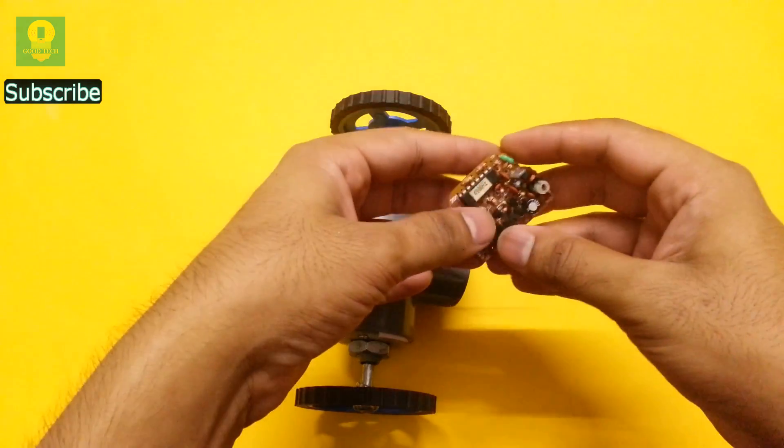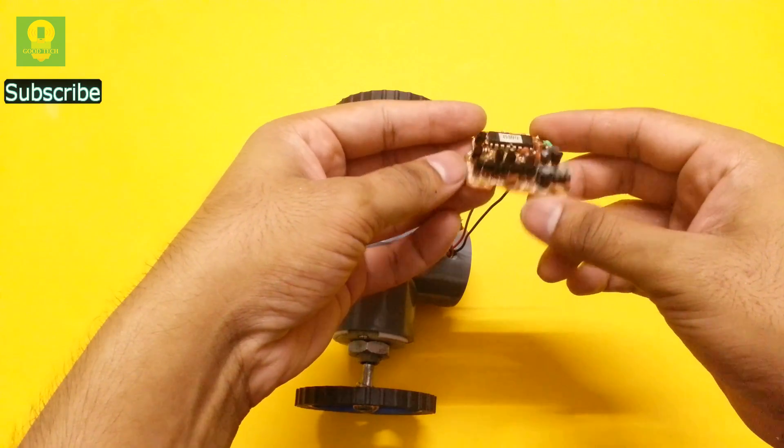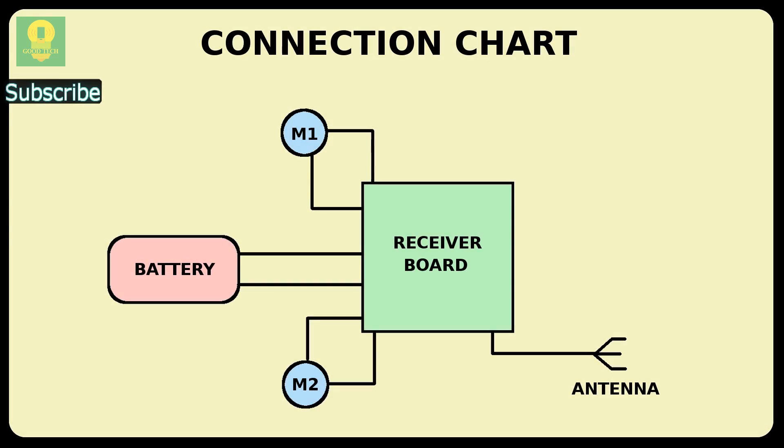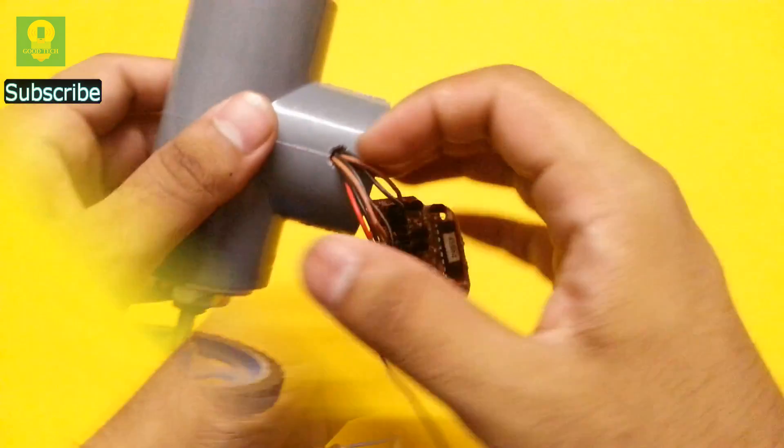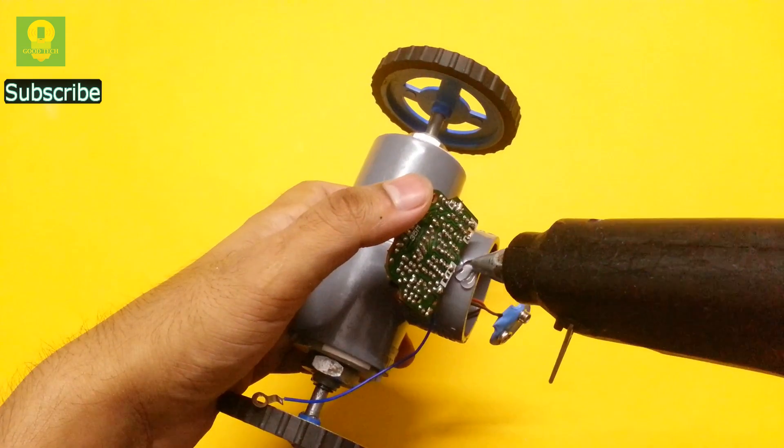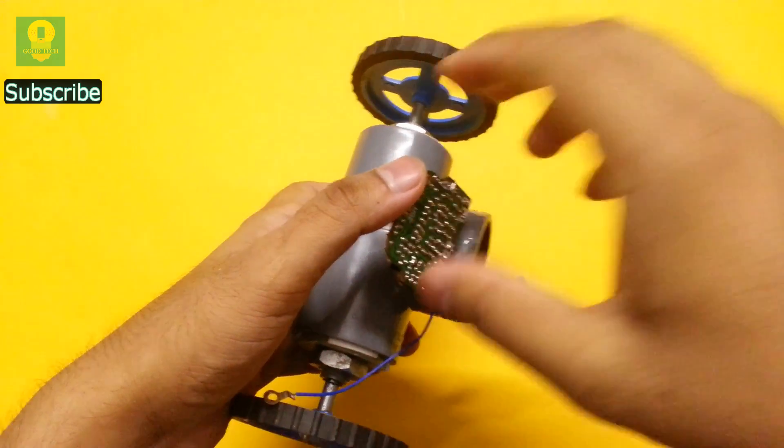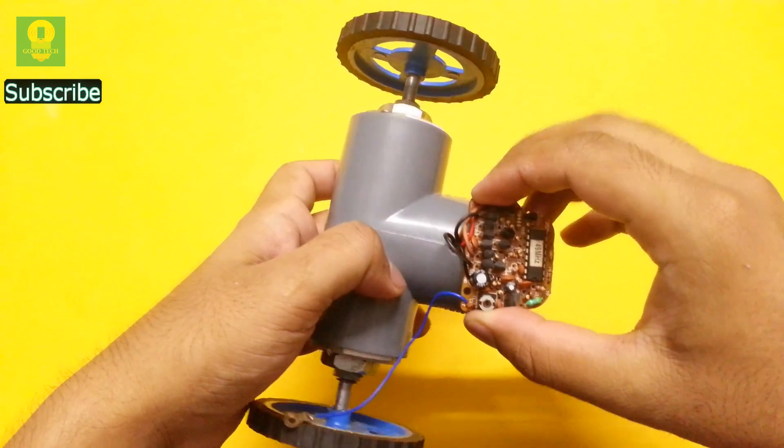Now take a wireless receiver from an old RC toy. Refer to the diagram and make connections on the circuit board. Apply some hot glue and attach the circuit to the PVC tee.